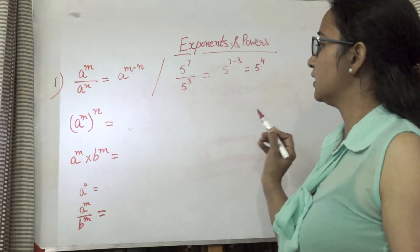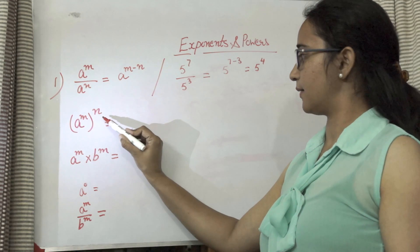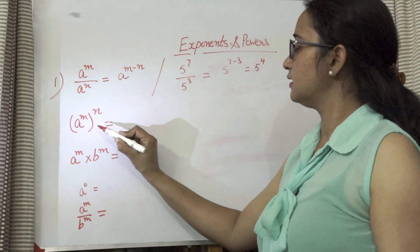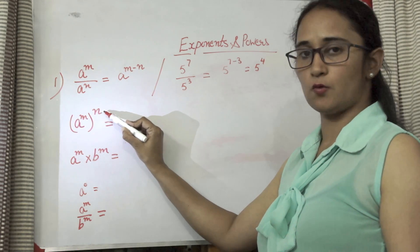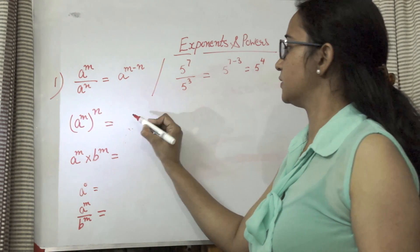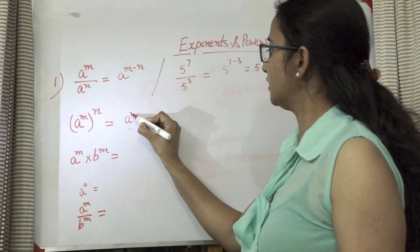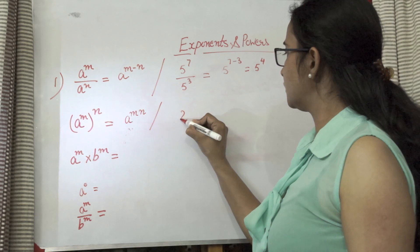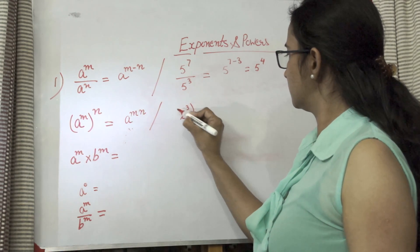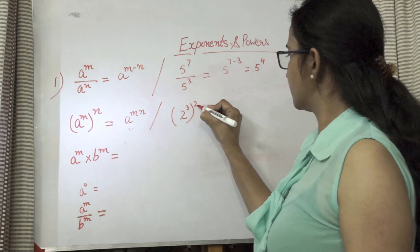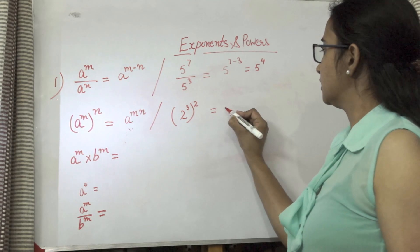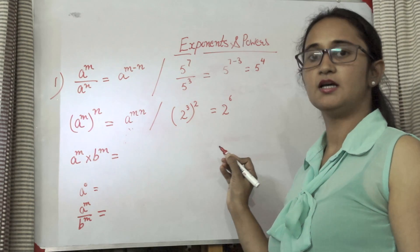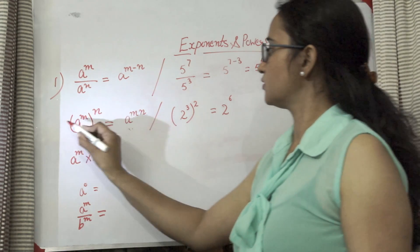The second law is a raised to the power m, then brackets raised to the power n. In this case, m and n are the powers which get multiplied: a raised to the power m × n. For example, 2 raised to the power 3, raised to the power 2 gives 2 raised to the power 3 × 2 = 6, so 2 raised to the power 6. This is your second law.